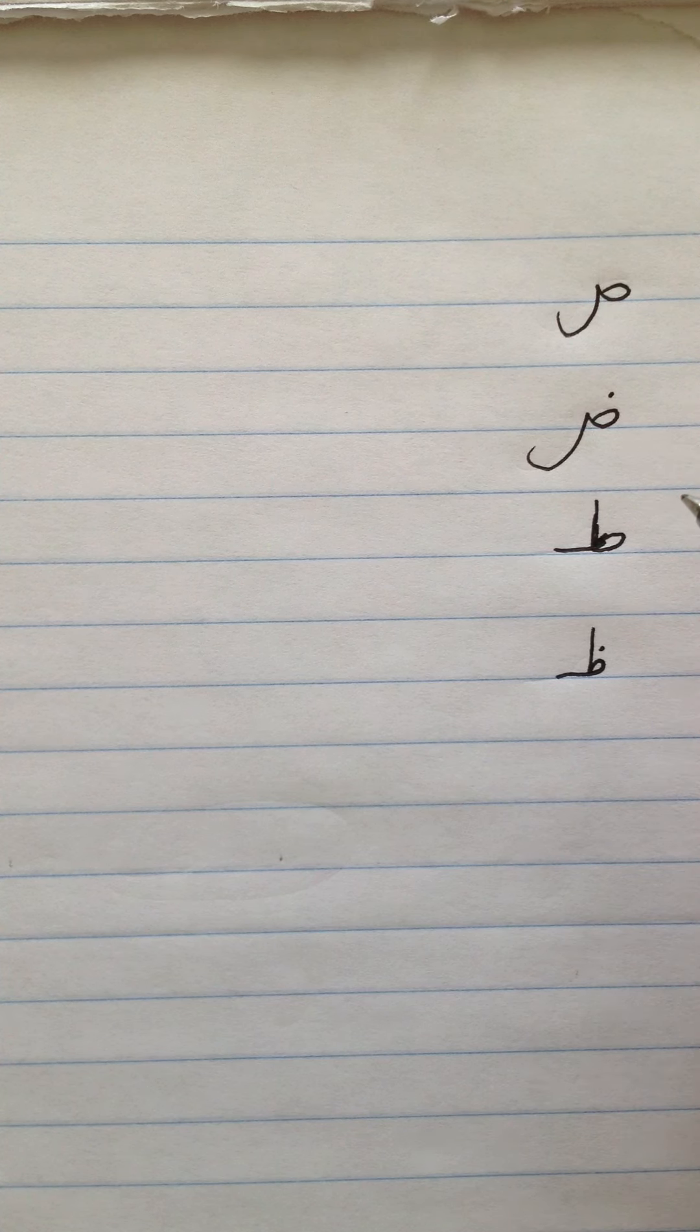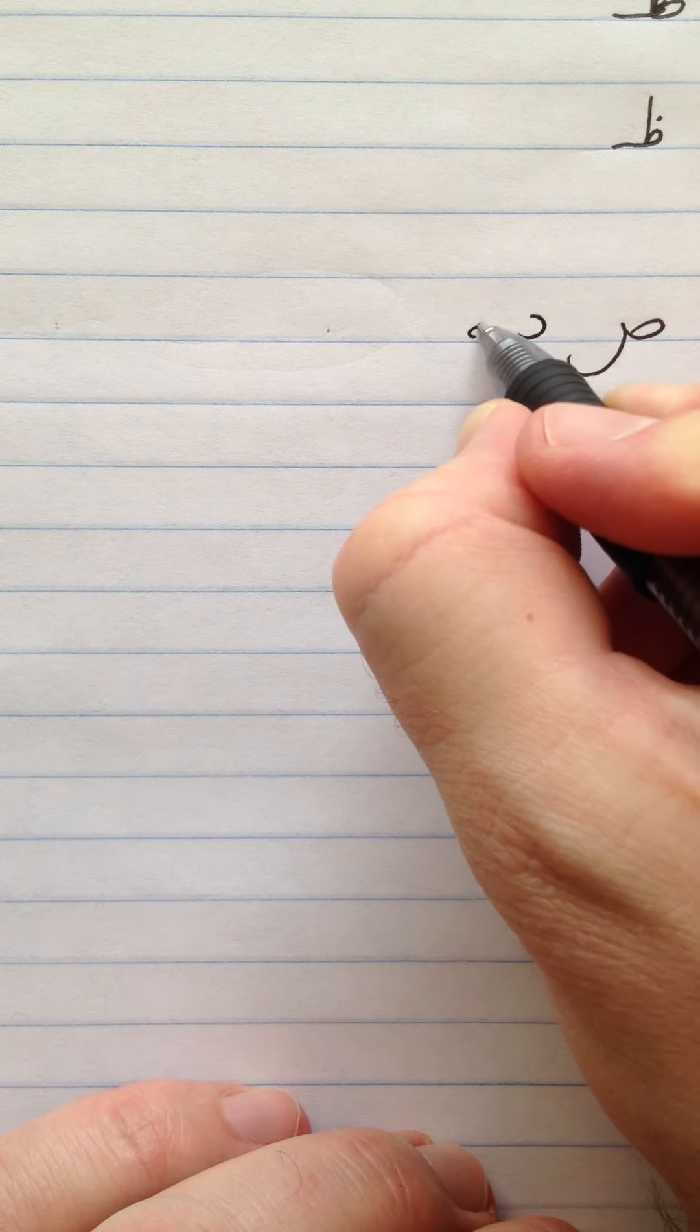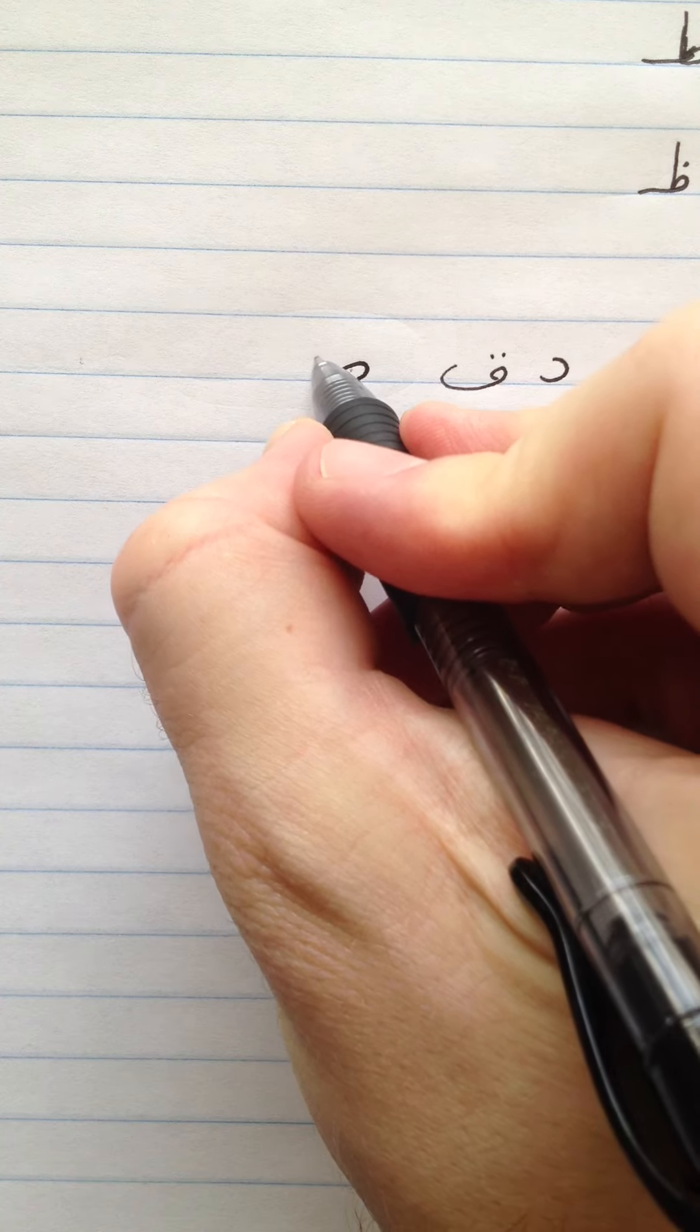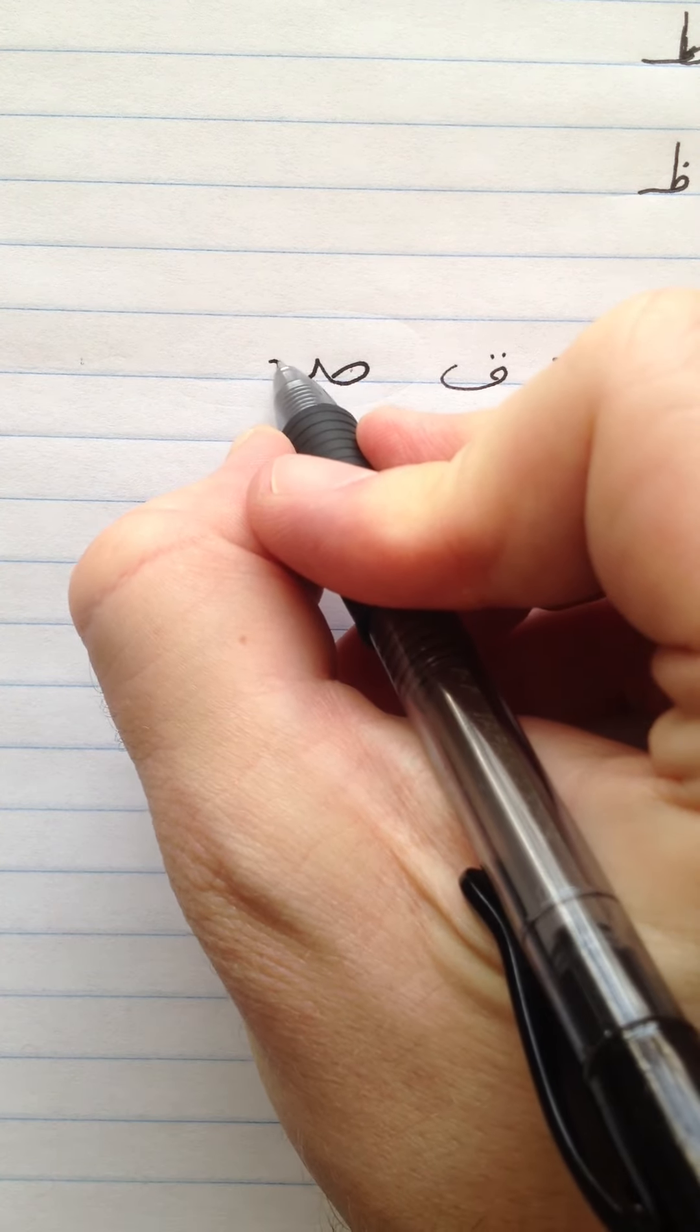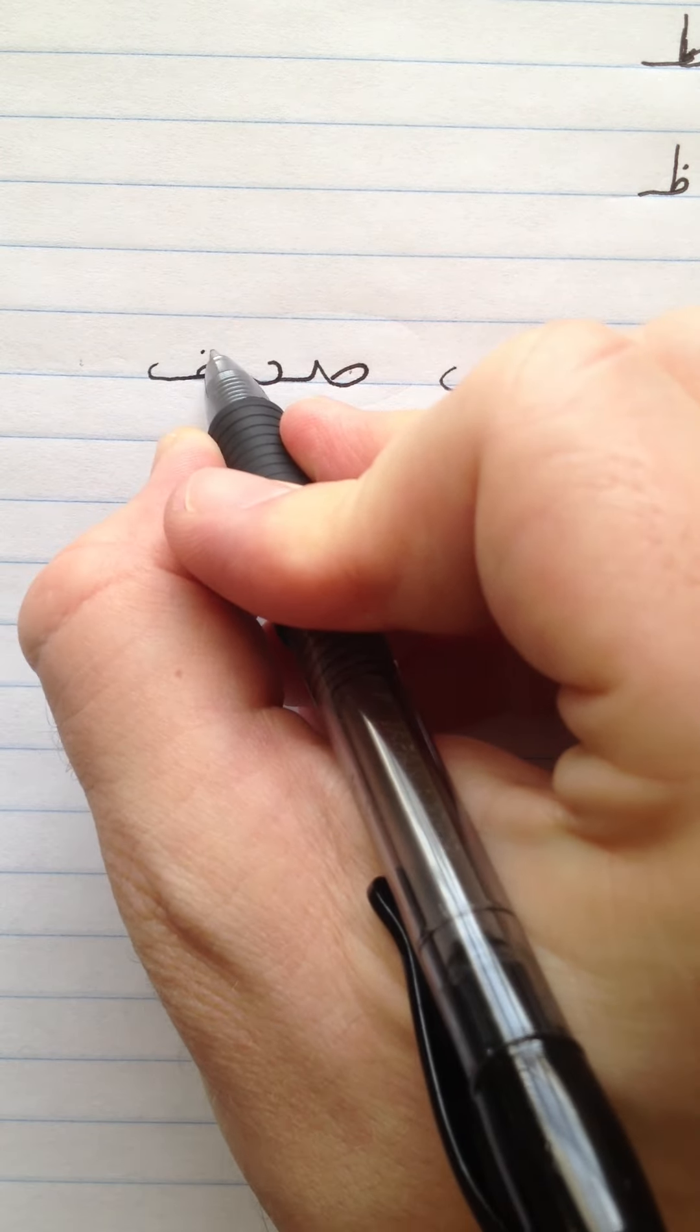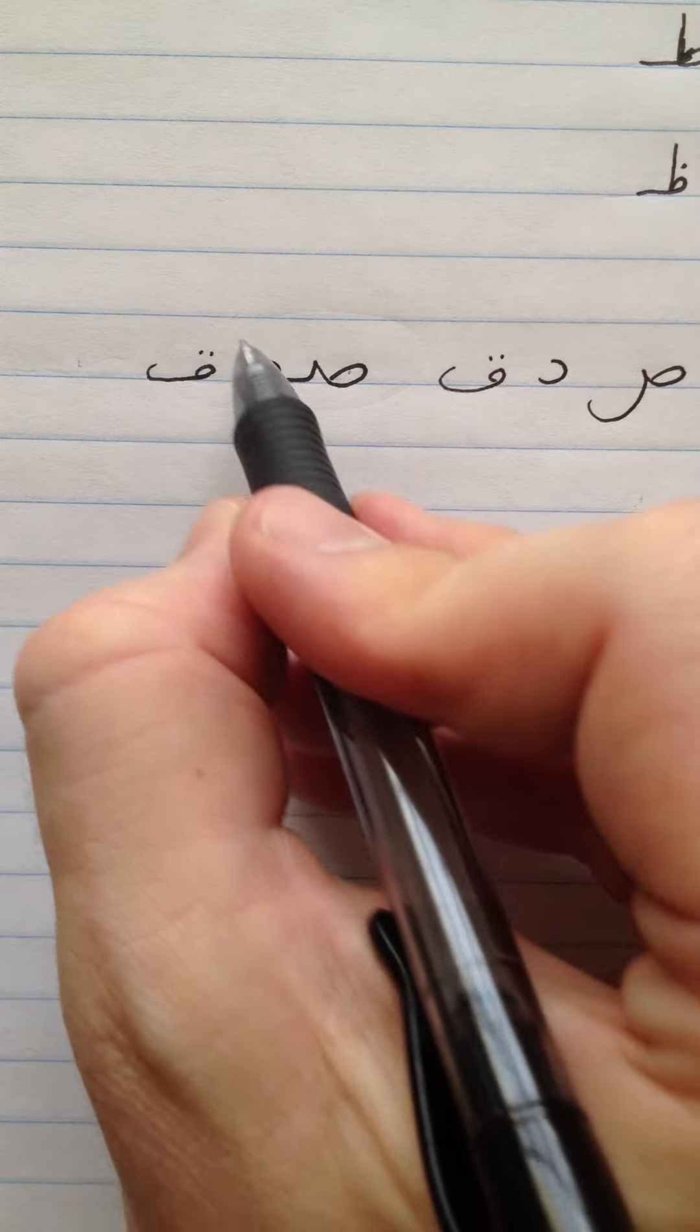Now let's get started writing some words. We'll start with the letter Swad. Our first word is going to be Sidk, which is Swad, Dal, Khaf. Now to connect these three letters: loop, peak, connect with Dal. Dal does not connect on the left, so Khaf stands alone. Sidk.